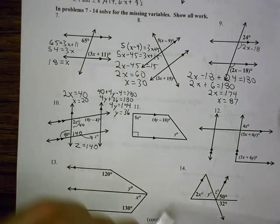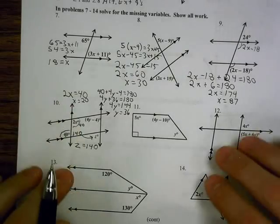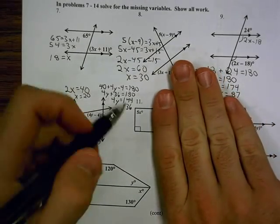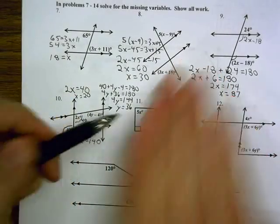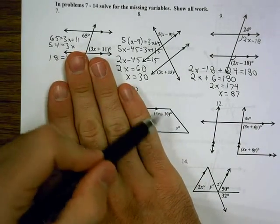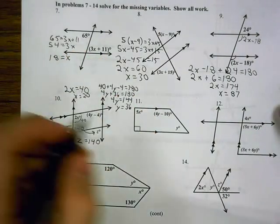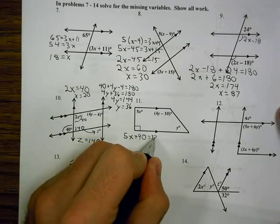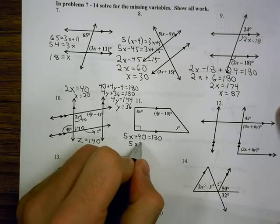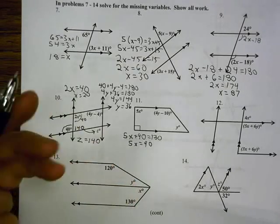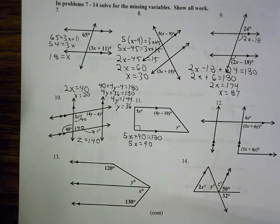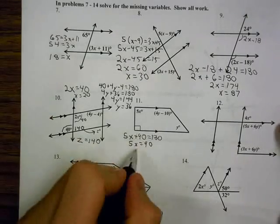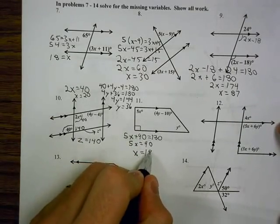Number 11, we're going to actually break this into two parts. I have the left side where these two are consecutive interior, so they're supplementary. I have the right side where these two are consecutive interior, and they're supplementary. So 5x plus 90 equals 180, which means that 5x equals 90, and x is 18.